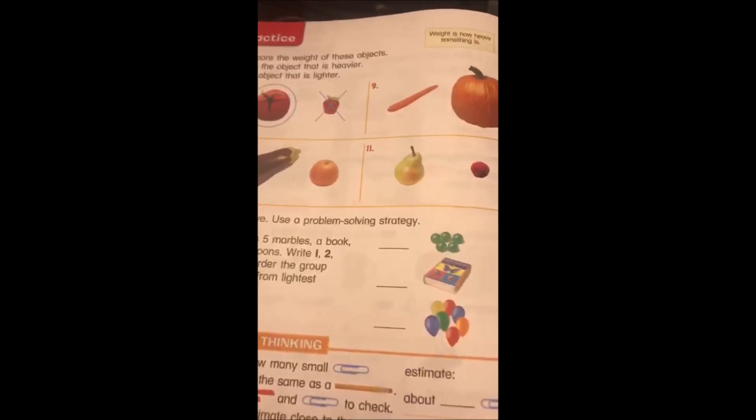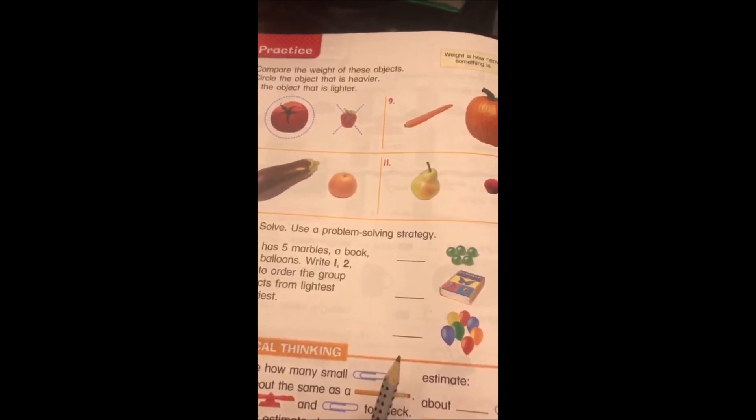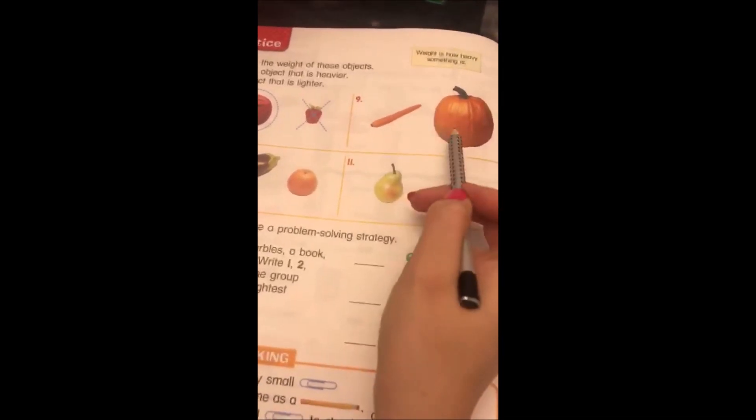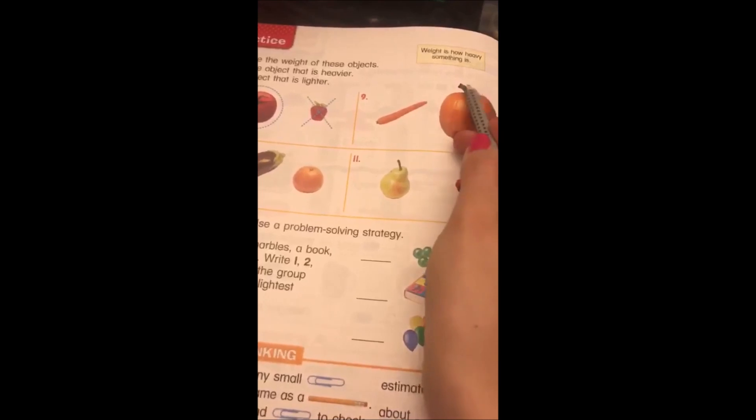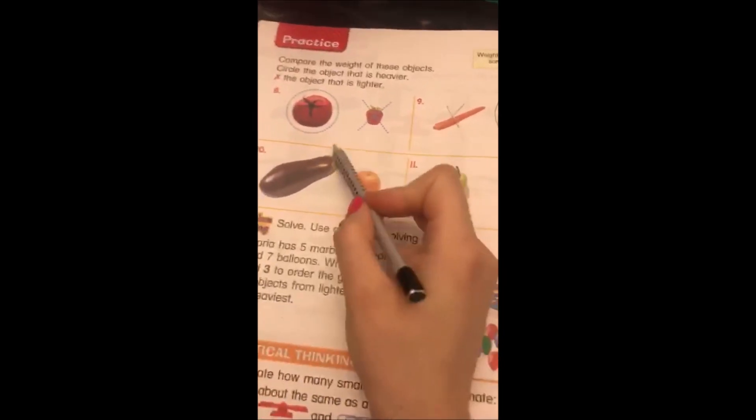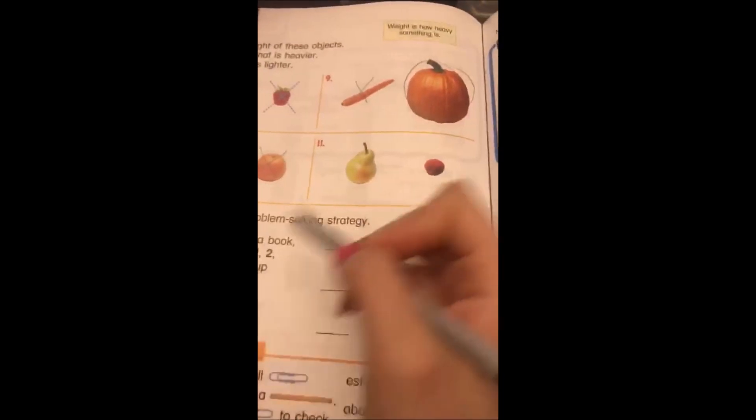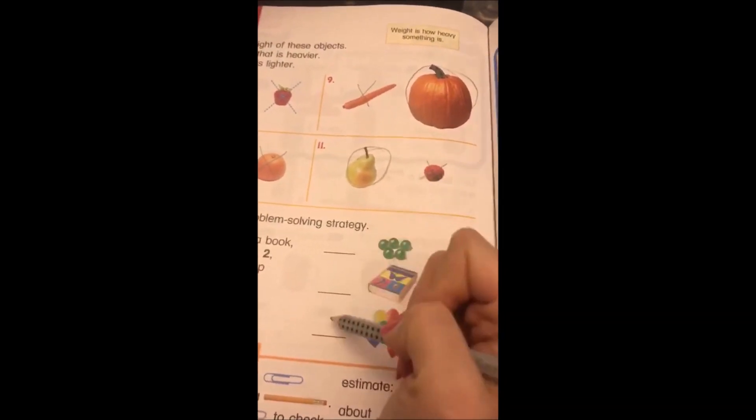We're going to pass to the next page. They said compare the weight of these objects. Circle the object that is heavier and cross the lighter. So who's heavier, the pumpkin or the carrots? Basically, the pumpkin is heavier. The carrot is lighter. Same thing, heavy, light. And here it's heavier, and this yummy thing is light.